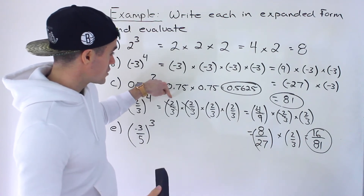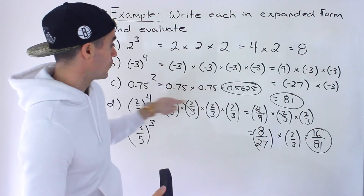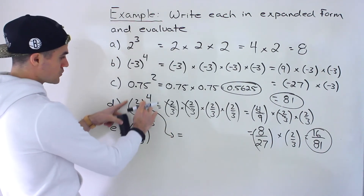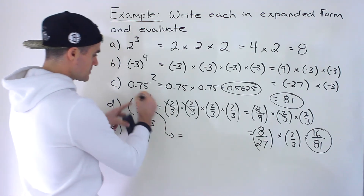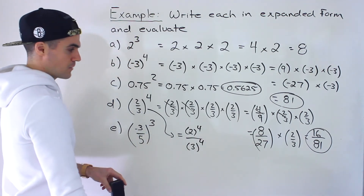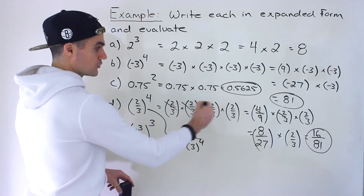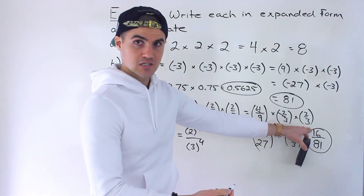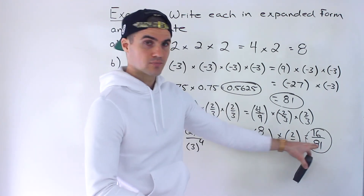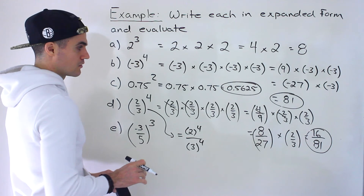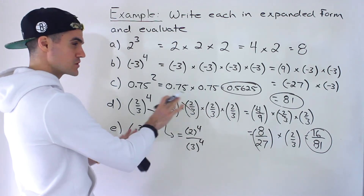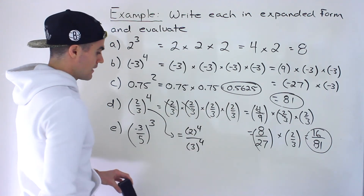Another way: you can multiply just the numerators — 2 times 2 times 2 times 2, or 2 to the power of 4. You'll see this in future exponent laws: when you have a fraction to a power, it equals the numerator to that power over the denominator to that power. So 2 to the power of 4 gives 16, and 3 to the power of 4 gives 81. We're just dealing with the fundamentals of expanding and evaluating here.